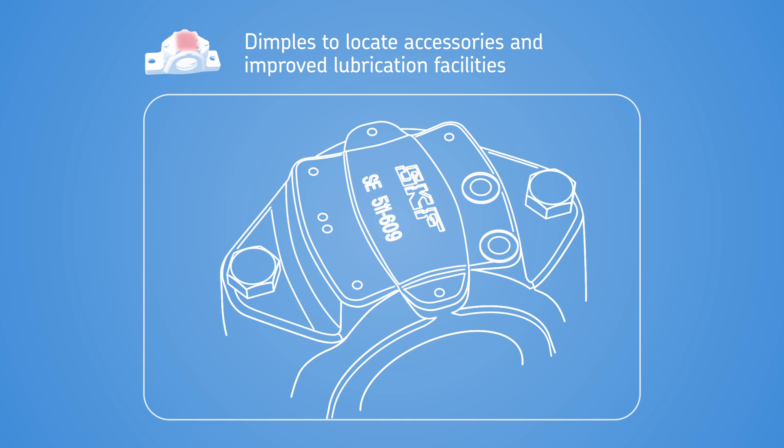Dimples cast into the housing cap indicate where grease fittings and condition monitoring sensors can be mounted for maximum effectiveness. In addition, the hole in the housing cap for re-lubrication through the center of the bearing is positioned off-center to the shaft axis.